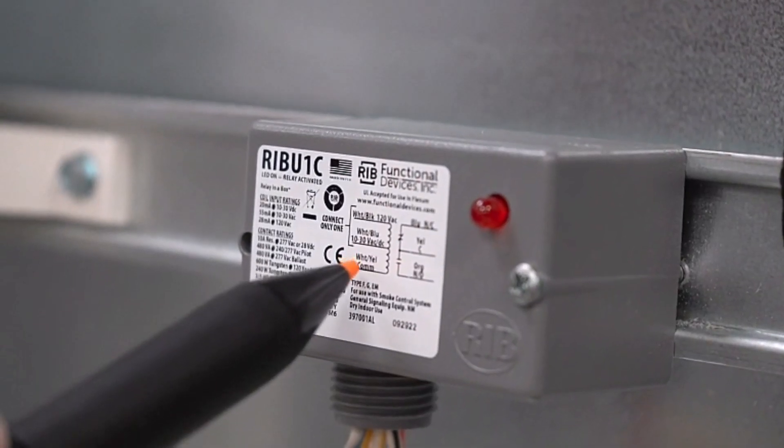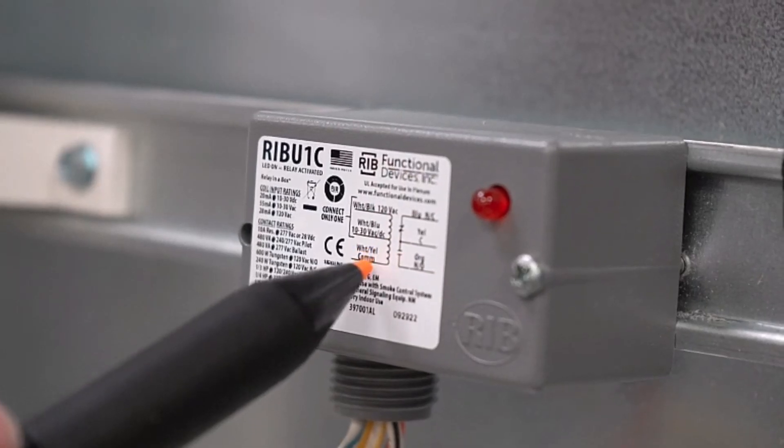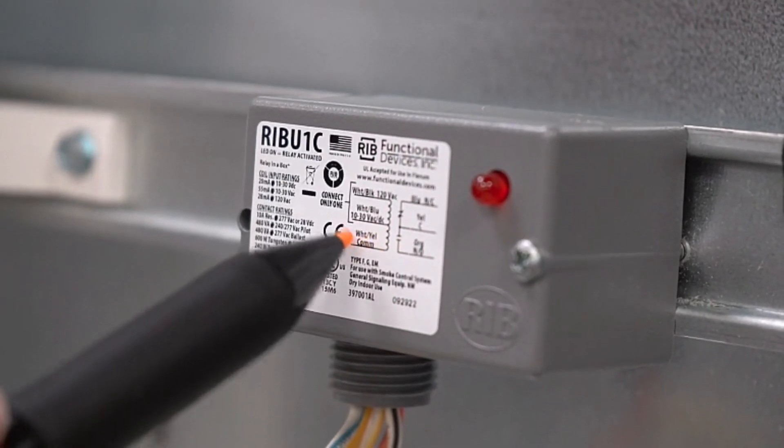As you can see here, they have two different power supplies to enable this coil. We have the white and black wire, which would be for your 120 volts AC, and then we have the white and blue wire for the 10 to 30 volts DC.